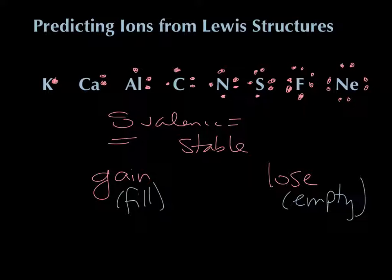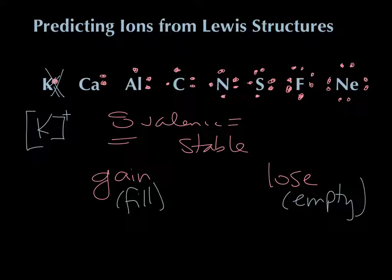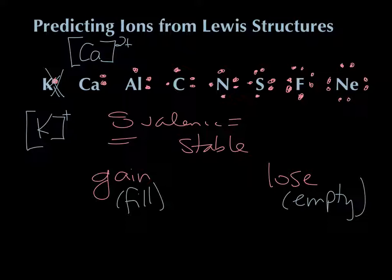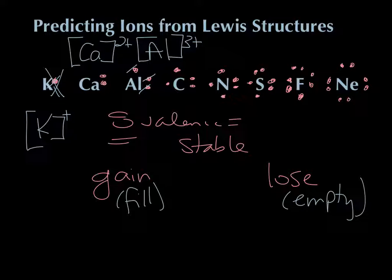Potassium has one electron — it could gain seven to fill up, or get rid of the one it has. It's much easier to get rid of that single electron, so it becomes K⁺. Calcium has two electrons — rather than gaining six more, it gets rid of the two and becomes Ca²⁺. Aluminum is going to get rid of its three electrons — that one, that one, and that one — and become Al³⁺. Those are three great examples of atoms that like to lose electrons and become cations.